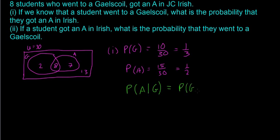Just don't get confused with the order. And that equals P of G intersect A, divided by P of G. So that's the probability of them getting an A, given they went to a Gaelscoil. You do have to kind of get used to that order.